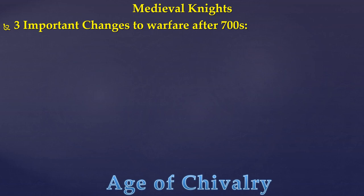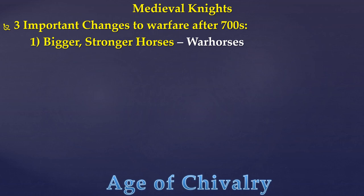Moving into what knights are: you see three major developments in warfare after the 700s that lead to the creation of the stereotypical medieval knight. The first is bigger, stronger horses. Through selective breeding, Europeans created the great European war horse — large enough to support a knight in full armor — providing bigger, stronger impacts on the charge.